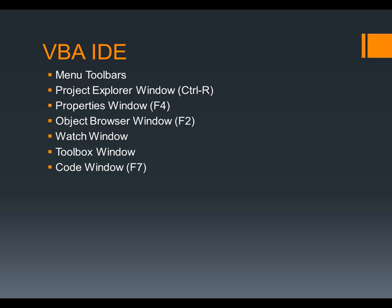The Toolbox window is where all of the user controls are contained. There are label controls, text controls, button controls, list box, combo box, check box, option box, and many others. We will go through most of those user controls.